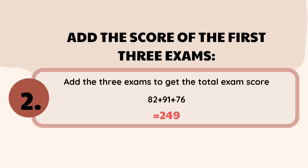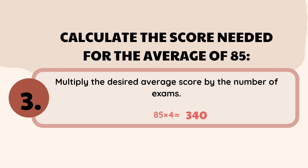For the third step, we need to calculate the score needed for the average of 85. We are going to use the operation of multiplication: multiply the desired average score by the number of exams. The desired average score is 85, and Dana is going to attempt a fourth examination, so 85 times 4 equals 340. Remember this number carefully.